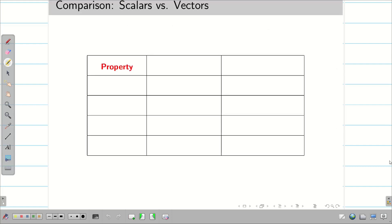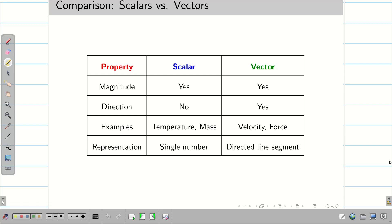Now, let us have a quick comparison for scalar and vector. When you take magnitude, both scalar and vector have magnitude. When you take direction, scalar has no direction, while vector has direction. Quick examples for scalars are temperature and mass, while for vectors are velocity and force. Scalar can be represented only as a single number, but vector can be represented as a directed line segment.